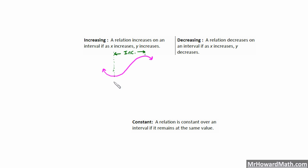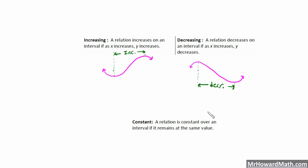Decreasing: a relation decreases on an interval if as x increases, y decreases — it's going down from left to right. So that would be decreasing from about here to about here. When you get into calculus and start working with derivatives — which are the slopes of the tangent lines — when the derivative or slope of the tangent line is positive, that's said to be increasing; when it's negative, that's considered decreasing.